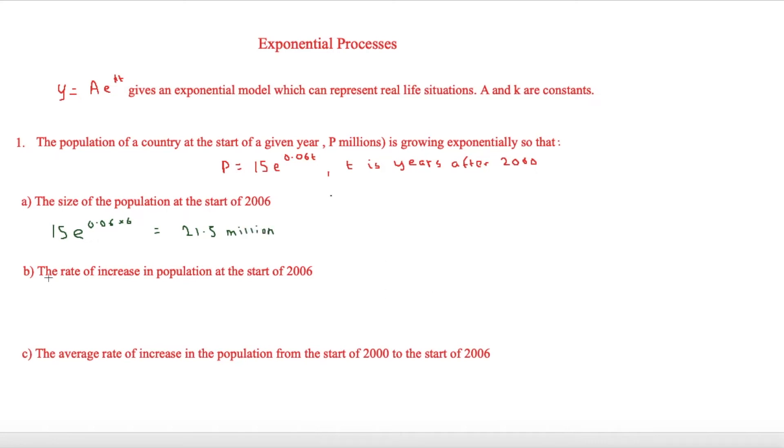The next question is asking for the rate of increase in population at the start of 2006. Now we're looking at rates, we need to look at differentiation and trying to find the gradient of this curve. So therefore we need to look at what dy by dx is of 15e to the 0.06t. Because there's a constant, we'll do 0.06 times by 15, which equals 0.9.